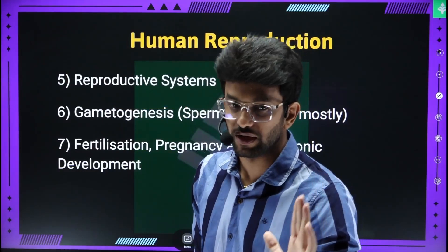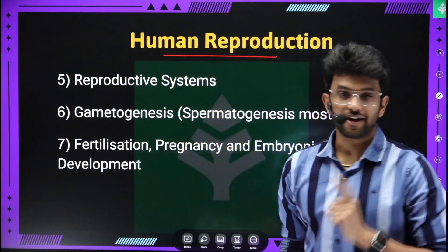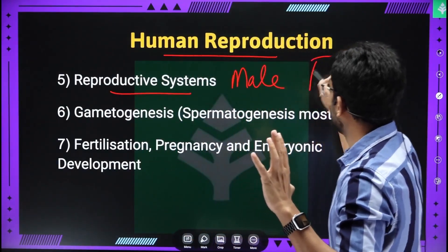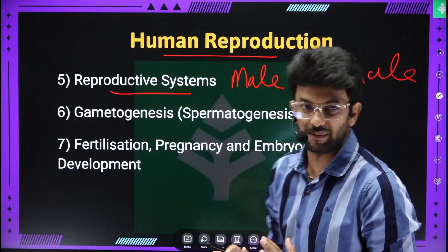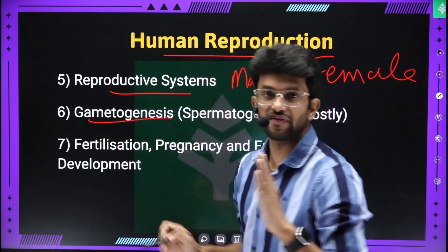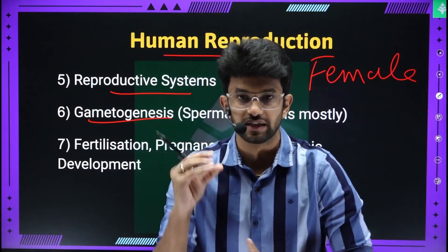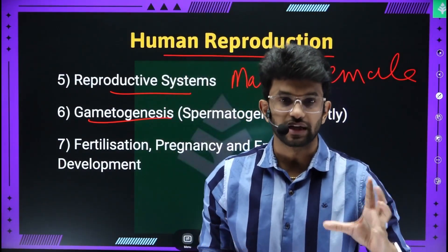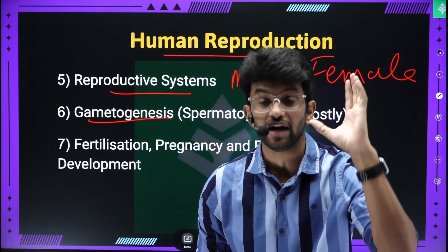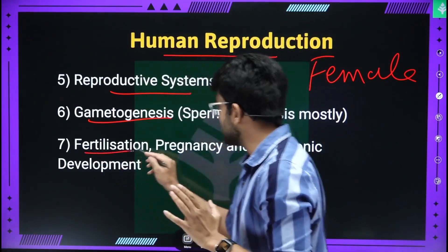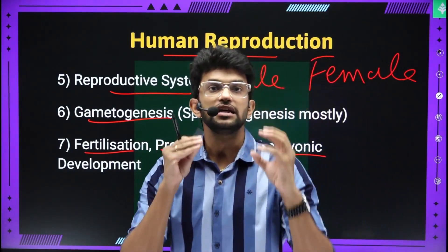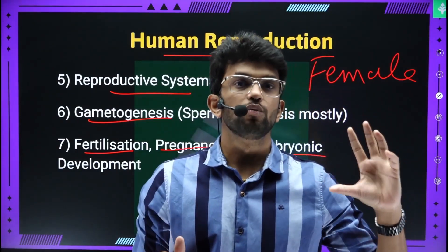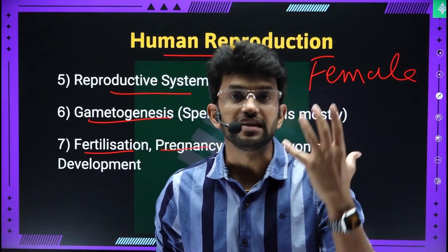Next chapter: Human Reproduction. Topics include male reproductive system and female reproductive system — very important — and gametogenesis, spermatogenesis, and the structure of a sperm. Fertilization is also key. Where does fertilization occur? In the fallopian tube — specifically at the ampullary isthmic junction.